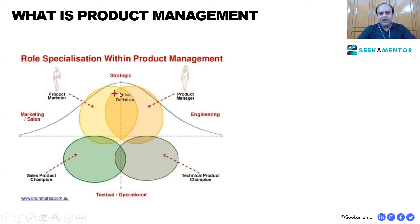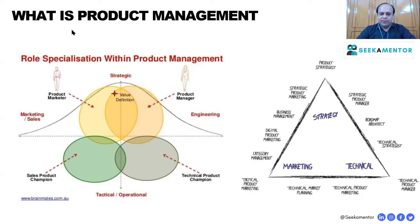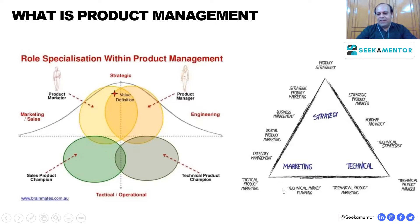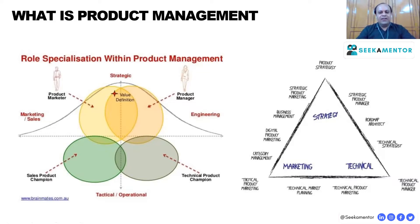Going deeper into the three major areas — strategic, marketing, and engineering — you will find different varieties of roles available in the market. In big MNCs like Google, Amazon, Facebook, Apple, or Accenture, different roles exist based on these three verticals. If you are working in a startup, all these roles are managed by a single person called the product manager. But in a big MNC, each person is specialized to handle a single role — that's how role count increases as the scale of the industry increases.